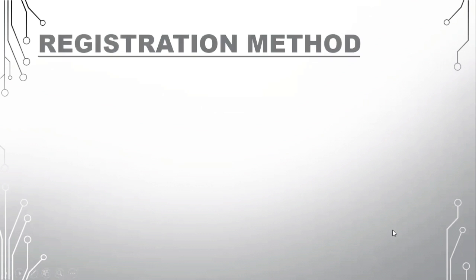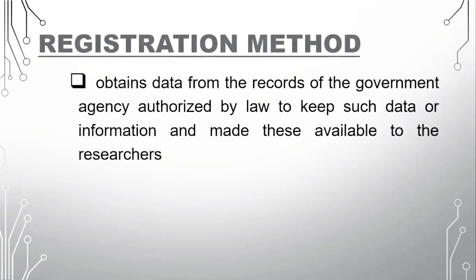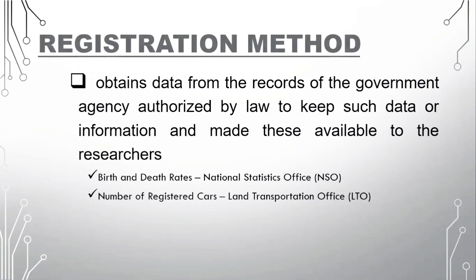Next is the registration method. We obtain data from the records of the government agency authorized by law to keep such data or information and make this available to researchers. For example, the birth and death rates by the NSO or National Statistics Office, the number of registered cars by the LTO or Land Transportation Office, and the list of registered voters by the COMELEC or Commissions on Elections.